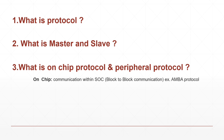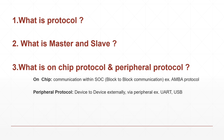An example of on-chip protocol is the AMBA protocol, which we will see in upcoming videos. The peripheral protocol, on the other hand, is a device-to-device external connection. If we are connecting one device with another and trying to transfer data from one device to the other device, we use the peripheral protocol.